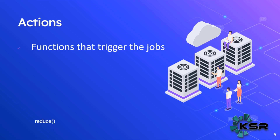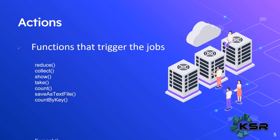What are the available actions in PySpark? Reduce — which can be used in both RDD and DataFrame. Collect is used for RDD. Show is for printing the DataFrame. Take is for retrieving a particular number of records, passing the number of records as a parameter. Also: count, saveAsTextFile, countByKey, forEach, takeSample, and many more. When you use one of these actions, only then will the job be triggered.